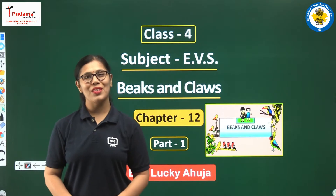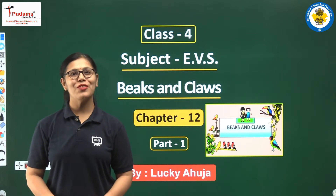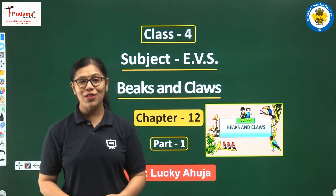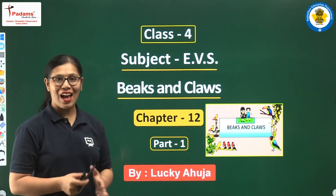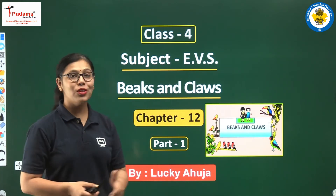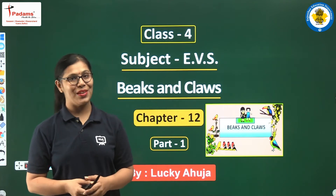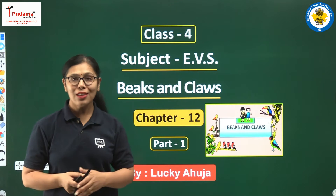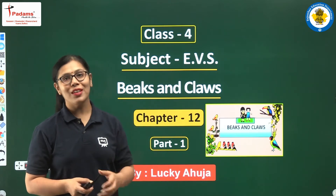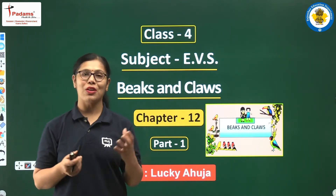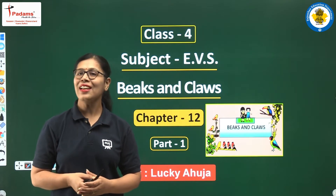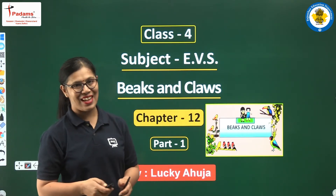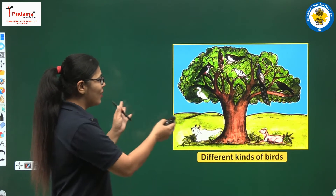Hello dear students, my name is Lucky Auja and I'm your teacher for EVS class 4th. In class 4th EVS we have already completed 11 chapters and today we are going to start a new chapter — chapter number 12 — named 'Beaks and Claws.' This chapter is about birds because birds have beaks and claws. Today we are starting part one of this chapter.